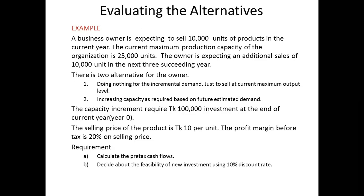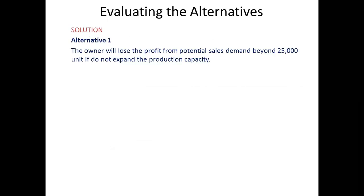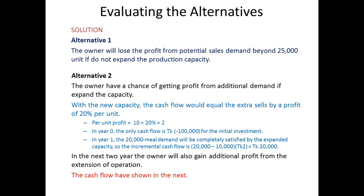The owner will lose profit from potential sales demand beyond 25,000 units if the product capacity is not expanded. However, the owner will have a chance of gaining profit from additional demand by expanding the capacity.